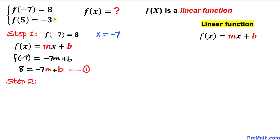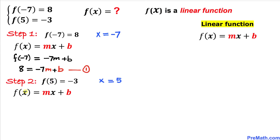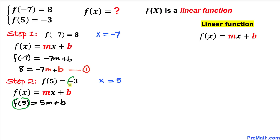Here's our next step. Let's focus on the next equation: f of 5 equals negative 3. Here we can see our x value is 5, so x equals 5. Let's substitute x by 5 in this linear function. So this equation becomes f of 5 equals 5m plus b. We know f of 5 equals negative 3, so we replace it: negative 3 equals 5m plus b. Let's call this equation number 2.